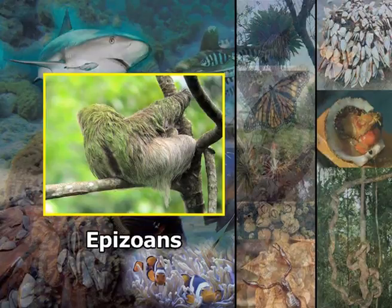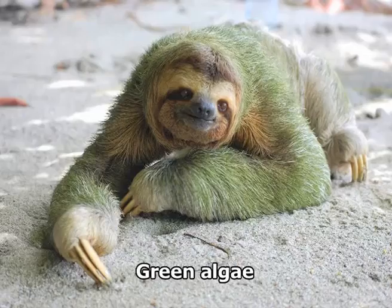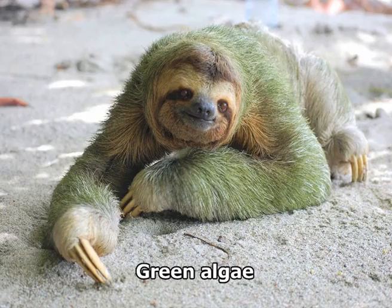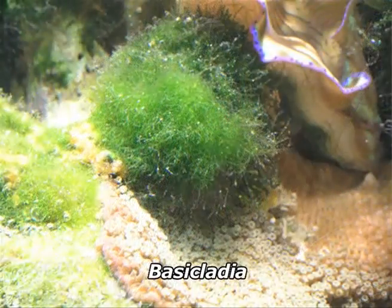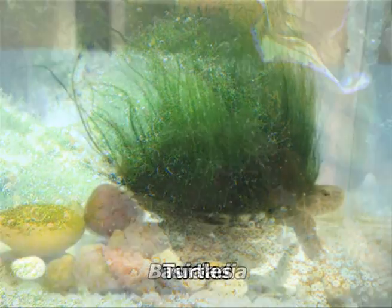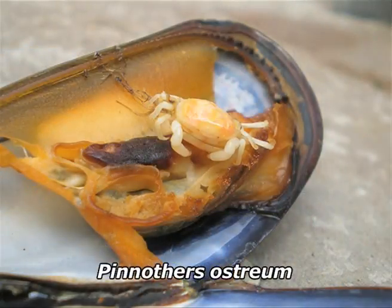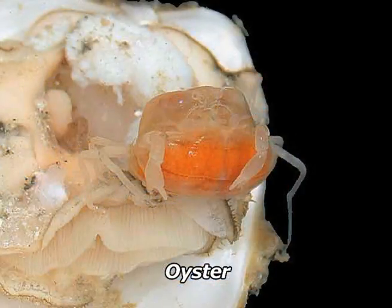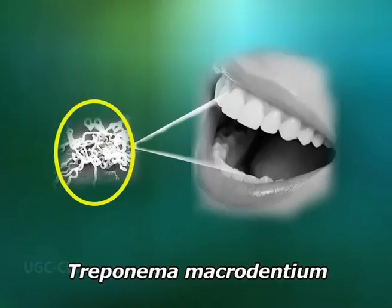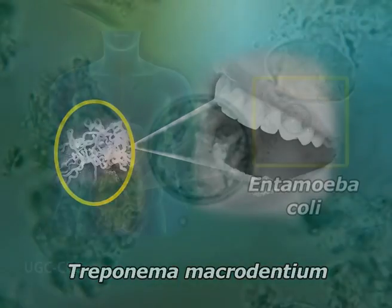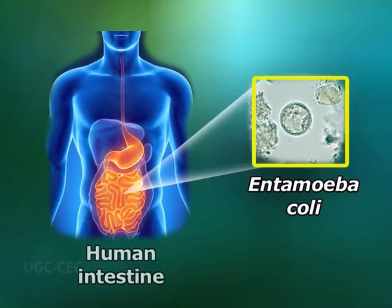Some plants grow on the surfaces of animals — for example, green algae grow on the long grooved hairs of the sloth, and Basicladia grows on the backs of freshwater turtles. The commensal oyster crab Pinnotheres is found in the mantle cavity of oysters, obtaining shelter and food from the host mollusk without causing any harm. Some organisms such as Treponema macrodentium living in the mouth and Entamoeba coli in the intestine of humans are harmless commensals.